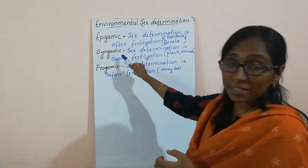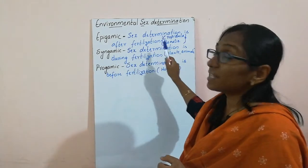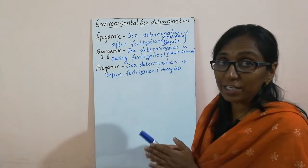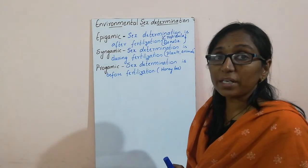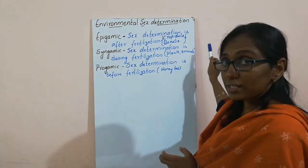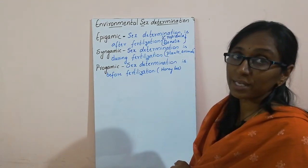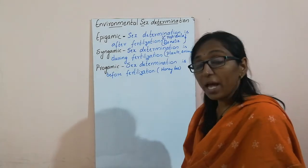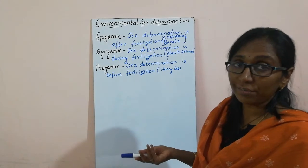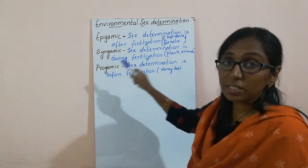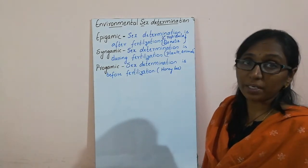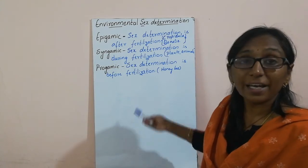If the sex determination occurs during the process of fertilization, then it is called as syngamic type of sex determination, and it is seen in most of the plants as well as animals. Pro-gamic means before the process of fertilization — if the sex determination is before fertilization, it is called pro-gamic type of sex determination, and it is seen in honeybee.